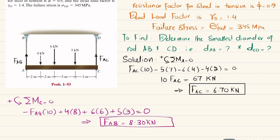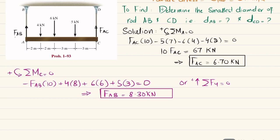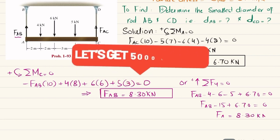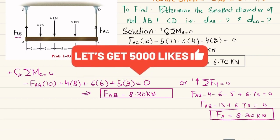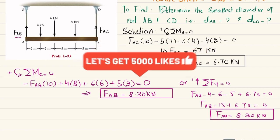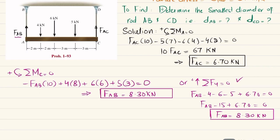We can also verify using the sum of forces in the y-direction equal to zero (upward positive): F_AB minus 4 minus 6 minus 5 plus 6.70 = 0, giving F_AB = 15 - 6.70 = 8.30 kN. This confirms our result. Now we have F_AB = 8.30 kN and F_AC = 6.70 kN.